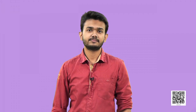Let us see the structure of the eye and the several functions each of the parts of the eye serve. The eye is roughly spherical in shape. The human eye consists of mainly seven parts: cornea, iris, pupil, lens, retina, nerve cells, and the optic nerve. Look at the diagram.